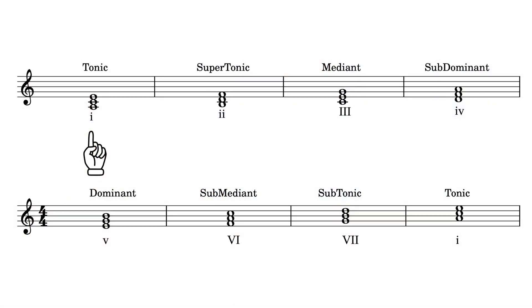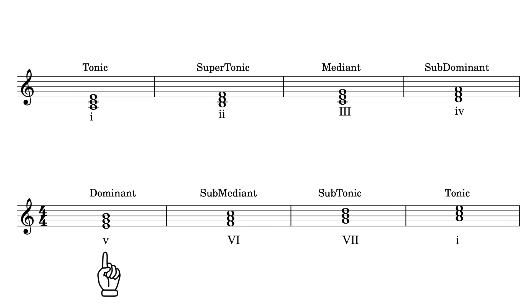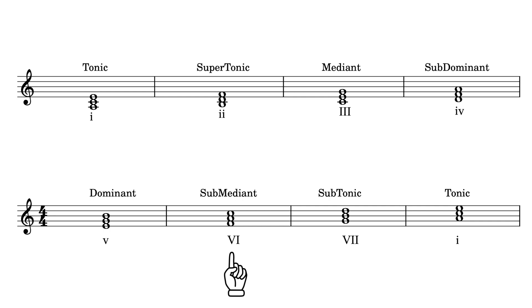In the natural minor, the tonic is once again a minor chord. But the supertonic is diminished. The mediant is major. The subdominant is minor. The dominant is also minor. The submediant is major. This would now be called the subtonic chord, because this is a whole step before the last note. And then back to minor.